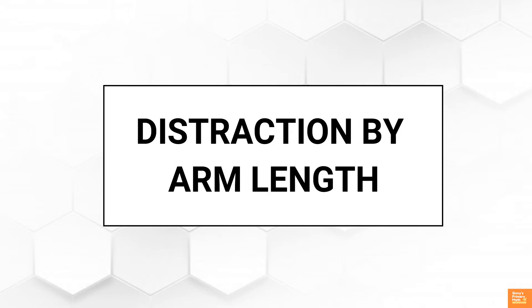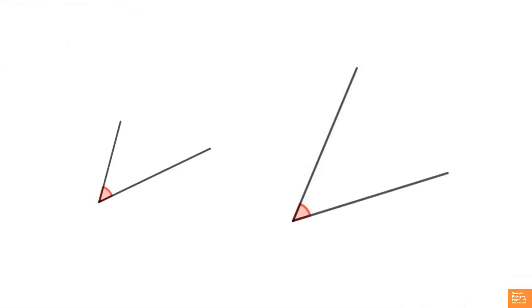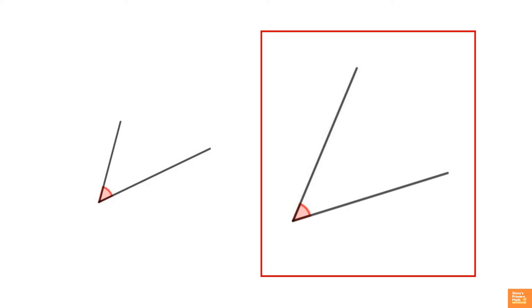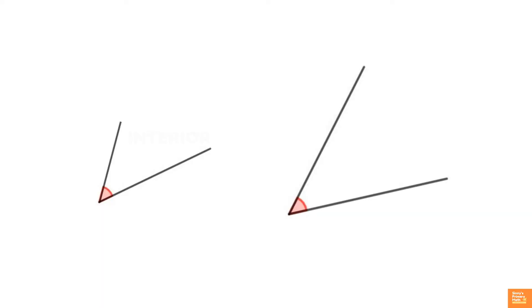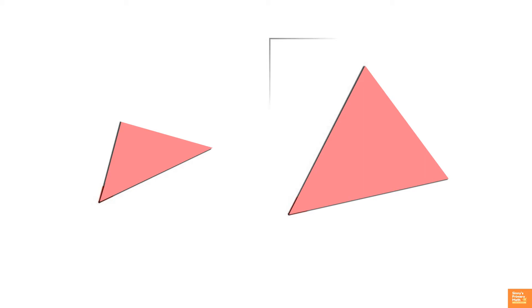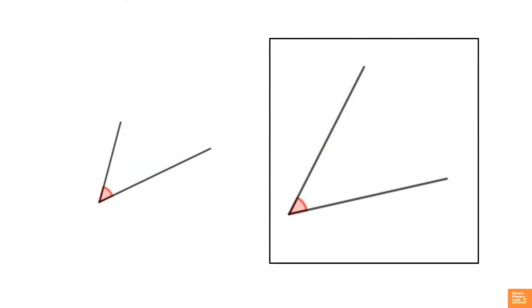Second misconception: distraction by arm length. Look at these two diagrams with equal angles, but one with much longer arms. The children would say that the angle on the right is larger than the angle on the left. These children wrongly believe that the size of an angle depends on the length of its arms. They are looking at the overall picture of an angle. In fact, the interior of an angle — that is, the area between the jaws extending out — creates a visual confusion. The angle having long arms appears to be larger to the child.